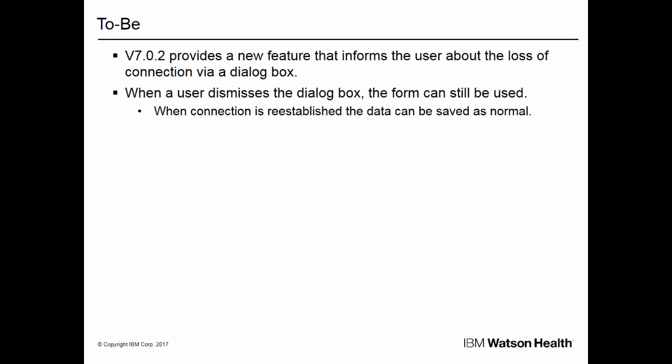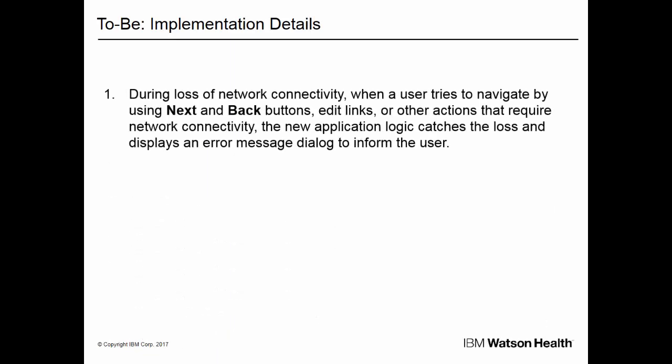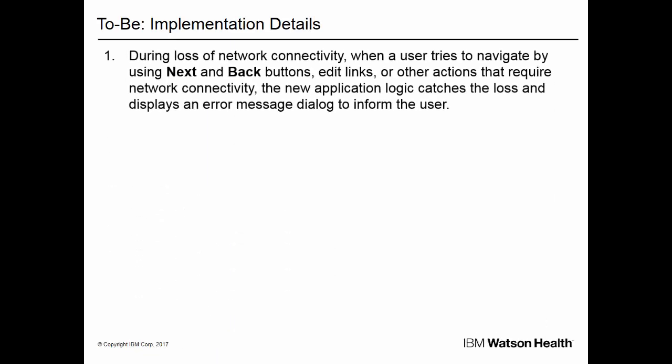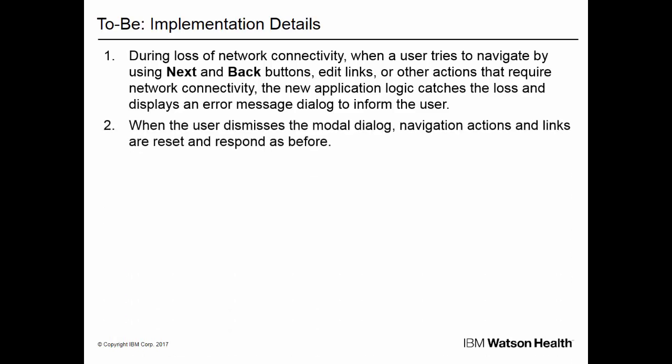In Kuram version 702, a new feature is provided that informs the user about the loss of connection via a dialog box. When a user dismisses the dialog box, the form can still be used, and when the connection is re-established, the data can be saved as normal. During loss of network connectivity, when a user tries to navigate by using Next and Back buttons, or the Edit links, or other actions that require network connectivity, the new application logic catches the loss and displays an error message dialog to inform the user. When the user dismisses the modal dialog, navigation actions and links are reset and respond as before.